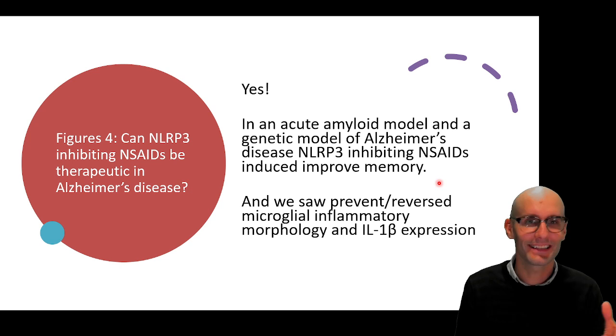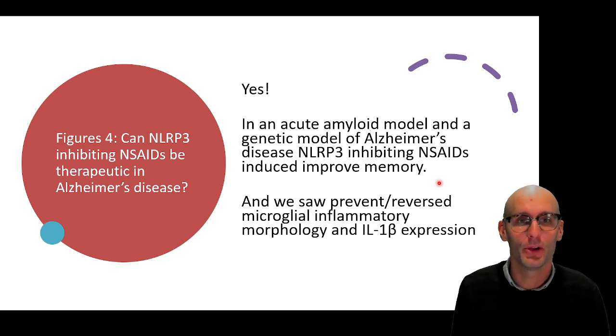Essentially, we found an existing old class of drugs had this new twist at the tail. It could also inhibit NLRP3 by inhibiting this chloride flux, probably. And by doing so, it was therapeutic in Alzheimer's disease. And that was the end of this paper.